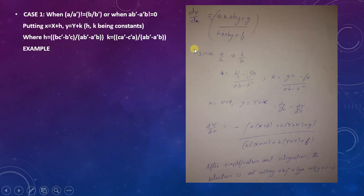Let us get into an example: dy/dx equals (ax + hy + g) divided by (hx + by + f). Since a/h is not equal to h/b, hence H equals (hf - gb) divided by (ab - h²).